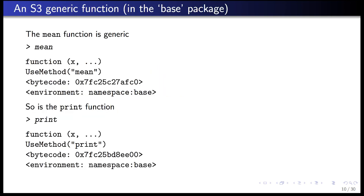Here's a basic generic function — the mean function. When you print out the code for mean, you'll see it takes argument x and then dot-dot-dot for a variable number of arguments. The only bit of code in it is useMethod('mean'). What useMethod does is dispatch the method for a given data type: x has a certain class, useMethod figures out what that class is, and dispatches the appropriate method.